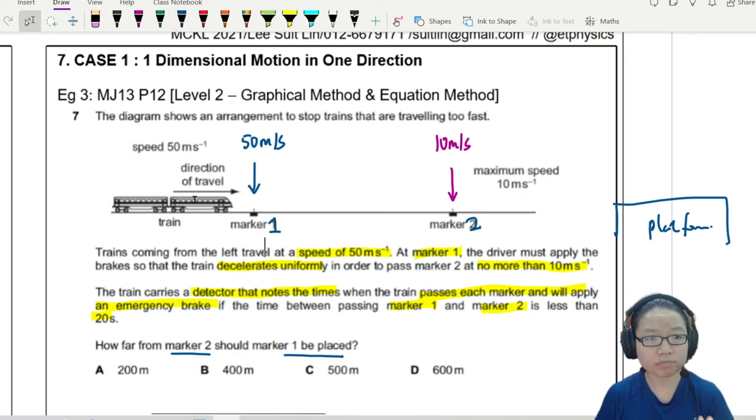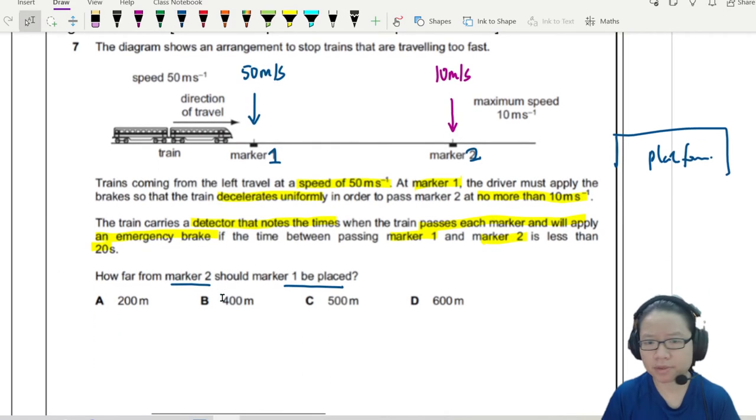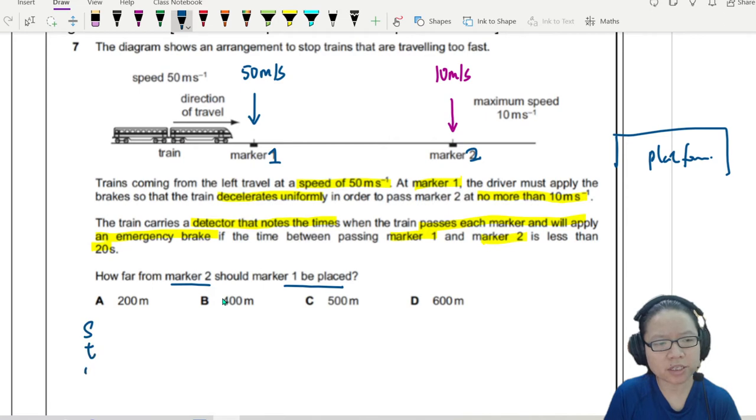So right now, we have a lot of information. But thankfully there's a diagram, so we can easily list down the STUVA list for us. Let me scroll down a bit. So you can think about, I can S-T-U-V-A, right? I want to find how far away the markers are.